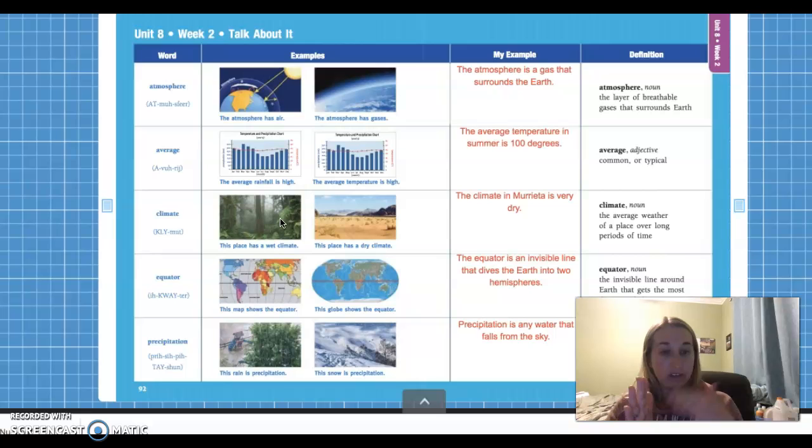Our third vocab word is climate. Now remember, weather is ever changing. So weather can always change. But climate is something that is the typical or the average weather of a place over a long period of time. So the rainforest is wet and hot. And the desert is hot and dry. So the weather may change in the rainforest or the desert. But the climate is typically always the same.